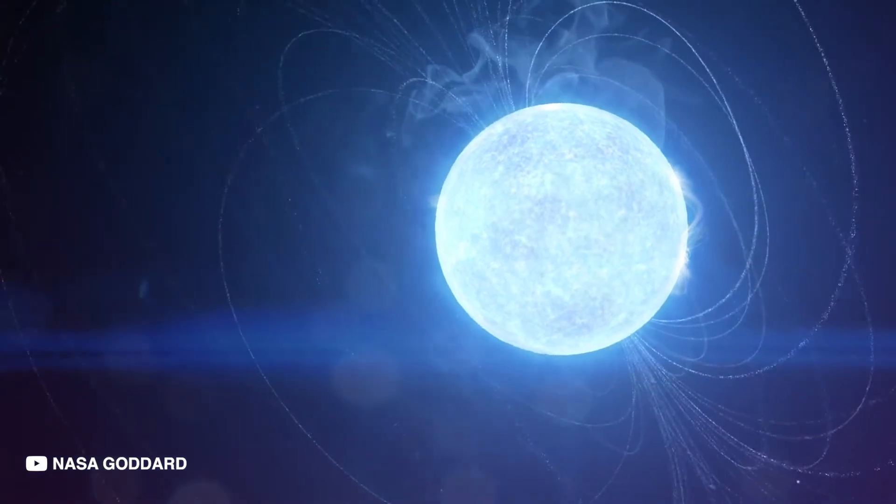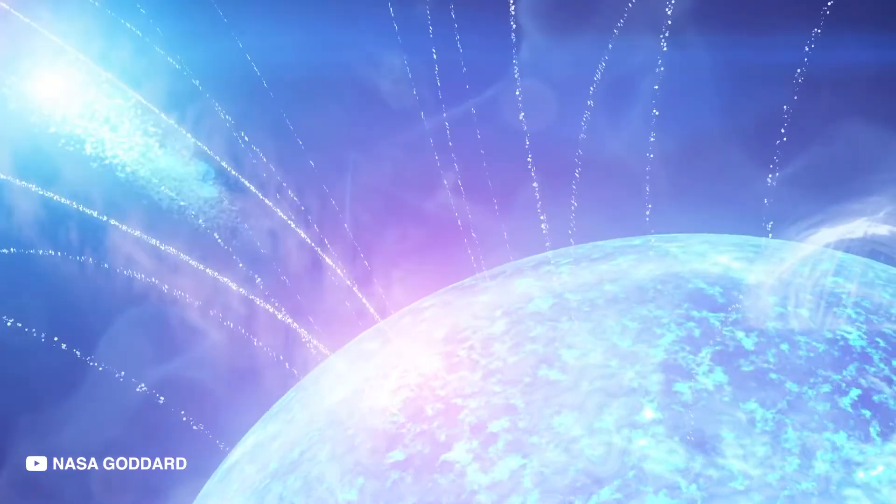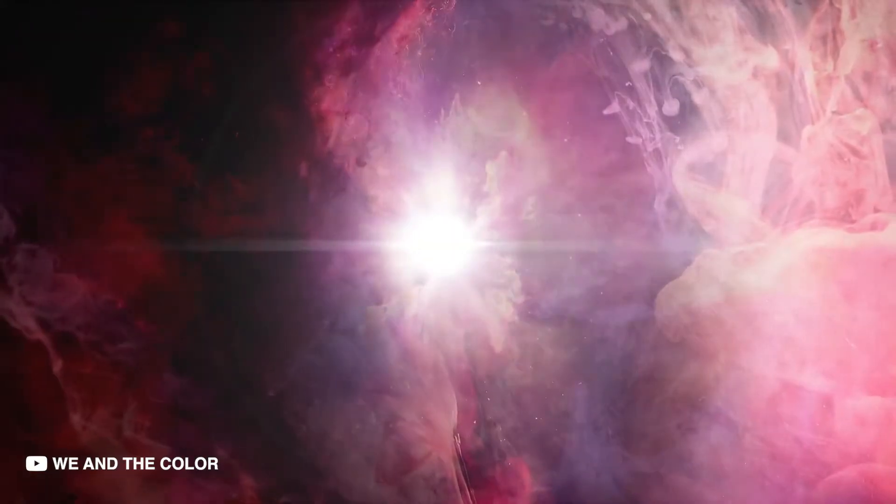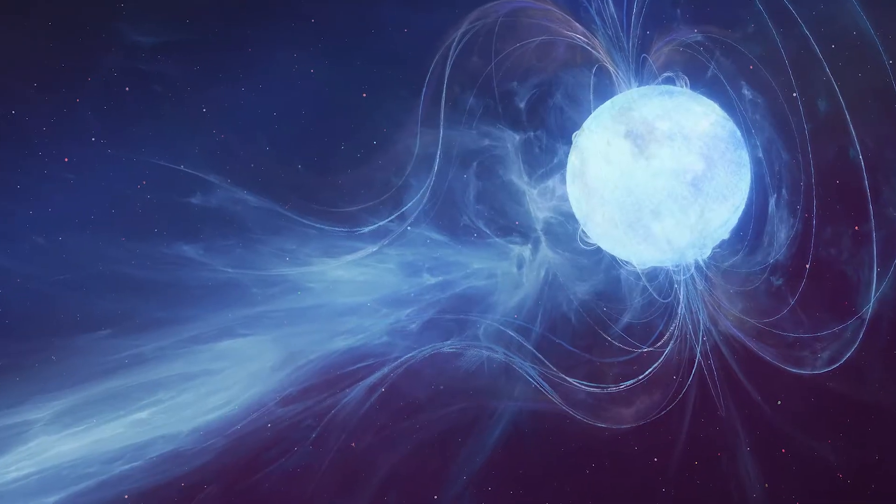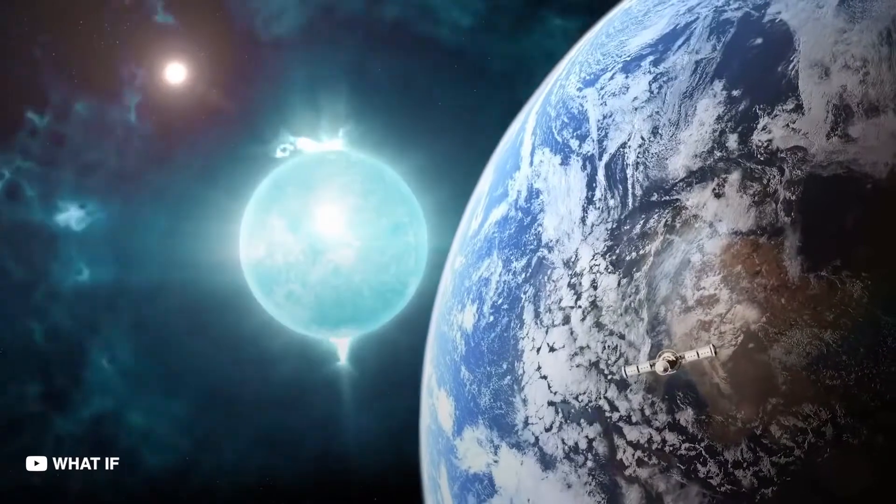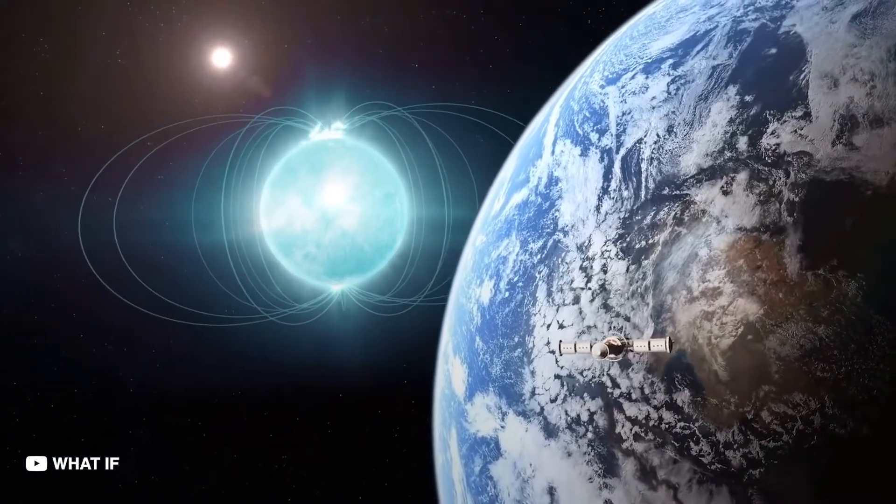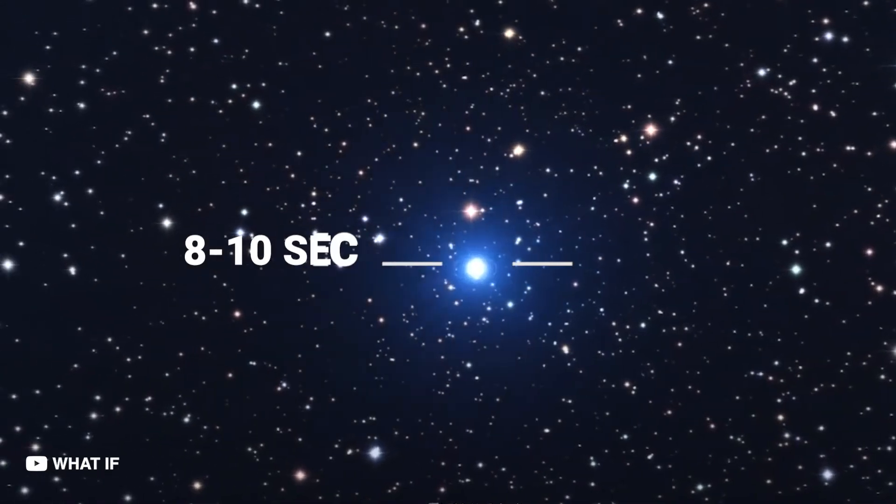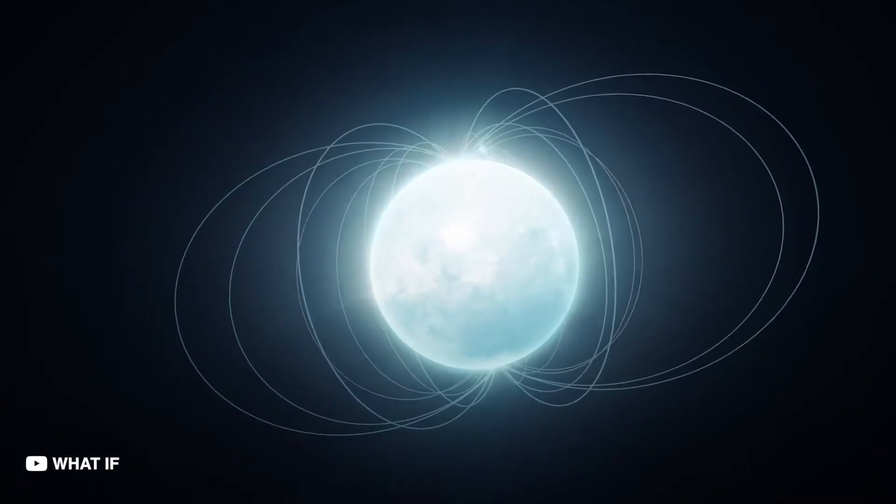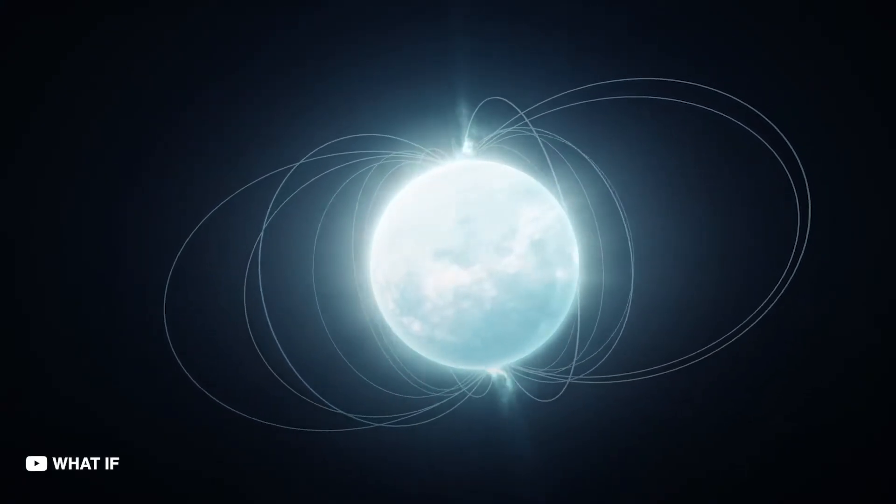Although we don't know much about them, it is believed that magnetars are a type of neutron star born of the supernova explosion. Although both are similar in formation, they hold some distinct characteristics that set them apart. Magnetars rotate slower, usually once every 8 to 10 seconds, as opposed to one rotation a second in the case of neutron stars.